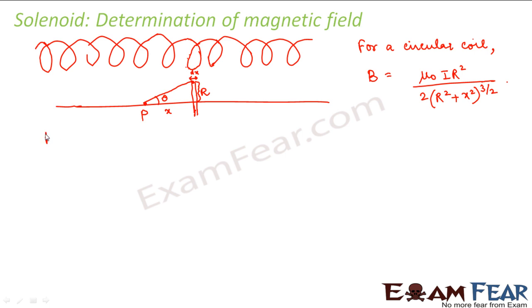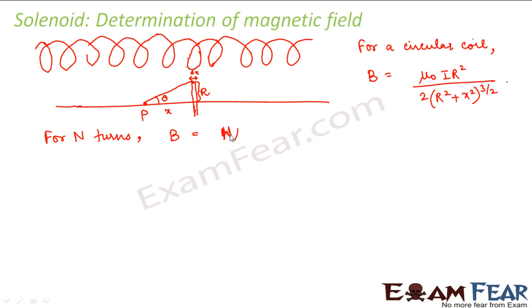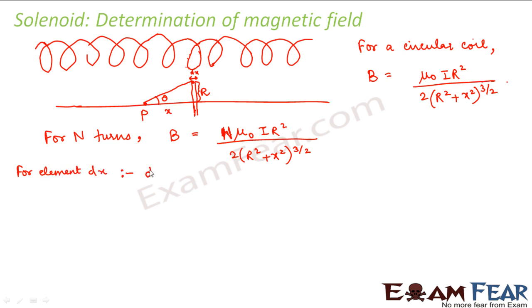Now in this case there are N turns, because a solenoid is made up of N such circular coils. So because of these N turns the magnetic field will become N·μ₀iR² divided by 2 into (R² + x²) to the power 3/2. For the small element dx, the small amount of magnetic field depends on the total number of turns over this element.